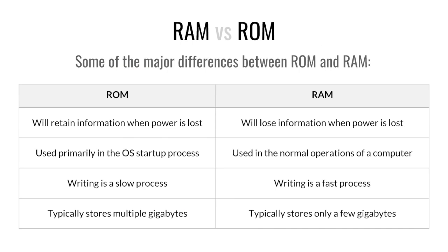A quick comparison between RAM and ROM: ROM retains information, RAM loses information. ROM is used in the startup process. RAM is usually used when you have browsers open — the normal operations of your computer while it's on.